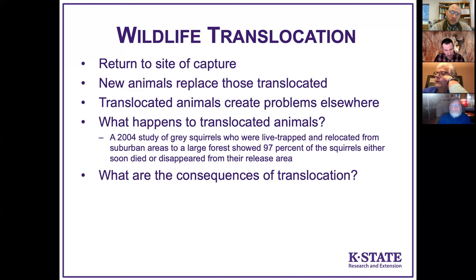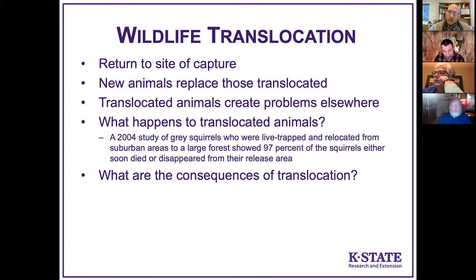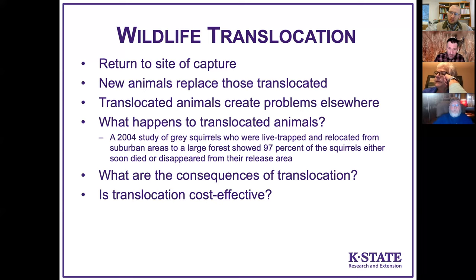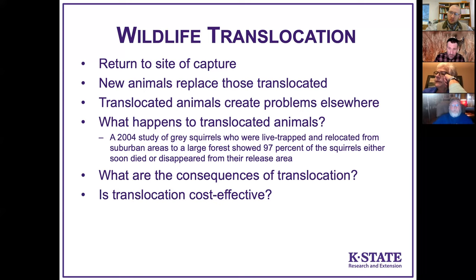What are the broader consequences of translocation? When we haul a critter somewhere, we're not just moving the critter — we're moving any diseases or parasites it carries. Raccoons can carry rabies; skunks are the most common rabies-positive species in Kansas. It's important not to move those critters around the landscape. Translocated animals also don't know where resources are in the new location, and we often move them into occupied territories where they may get into fights with resident animals.